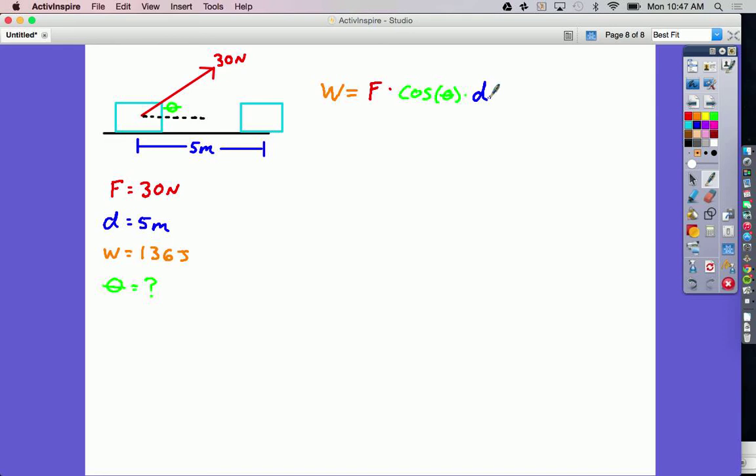So from here, we're trying to solve for the angle. So I'm going to get the cosine of theta all by itself, which means I'm going to have to divide the force, and I'm going to have to divide the distance over to the left side. So on the left side, I have work, and now I'm dividing that by the force of pull, and the distance that I'm pulling. And on the right side, I still have my cosine of theta.